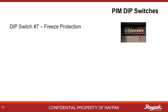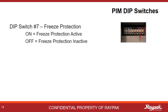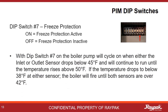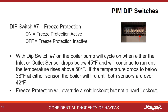Dip switch number seven is another example of some cool RAYPAC engineering. Turning on number seven enables freeze protection for the boiler. If the temperature drops below 45 degrees at either the inlet or the outlet sensor, then the boiler pump will fire for a bit, drawing some heat from other areas in the system, until the temperature is higher than 50 degrees at both sensors. If the temperature continues to drop and gets below 38 degrees at either sensor, then the boiler will fire for a few minutes until both sensors are over 42 degrees Fahrenheit. This process will override a soft lockout, but not a hard lockout, as that could be dangerous.